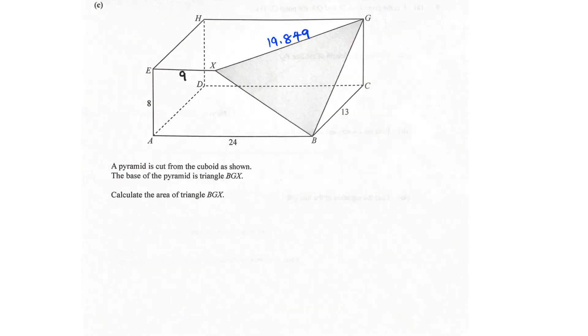Right, so now on to part C. I'm carrying on the length of XG from part B, 19.849, the 5SF version. And now we have a pyramid being cut from the cuboid. It's cut across from X to G and B, it's a plane of its own when viewed from this particular viewing angle. So the base of the pyramid is triangle BGX, and you need to calculate the area of this.